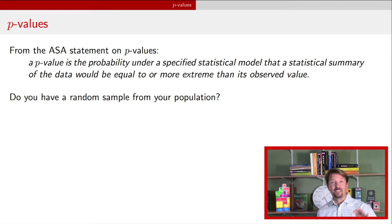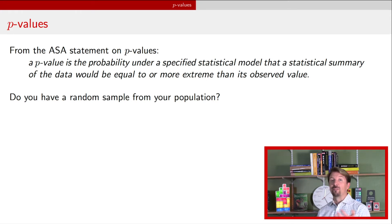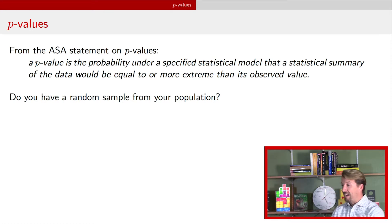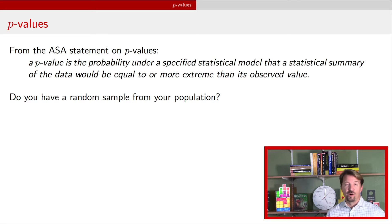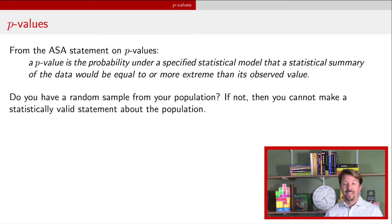The first reason that p-values don't mean what you think is that usually we're trying to make statements about a population parameter, and usually we do not have a random sample from that population. By random sample, I don't mean haphazardly picking individuals — I mean using a random number generator, assigning numbers to each unit in the population, and drawing them at random. If you don't have this kind of random sample, you cannot make statistically valid statements about that population.